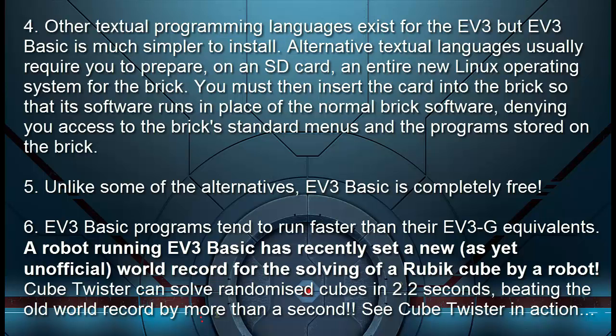EV3 BASIC programs tend to run faster than their EV3G equivalents. A robot running EV3 BASIC has recently set a new and as yet unofficial record for the solving of a Rubik's cube by a robot. CubeTwister can solve randomized cubes in 2.2 seconds, beating the old world record by more than a second. Here is CubeTwister in action.